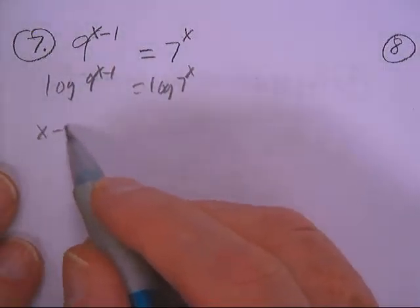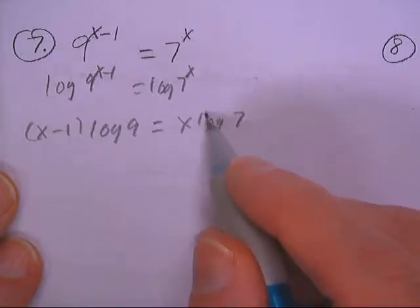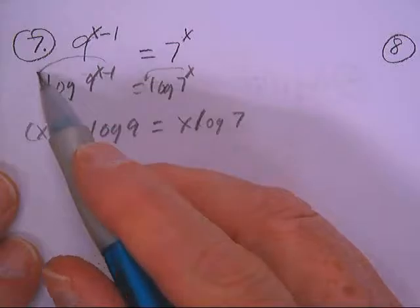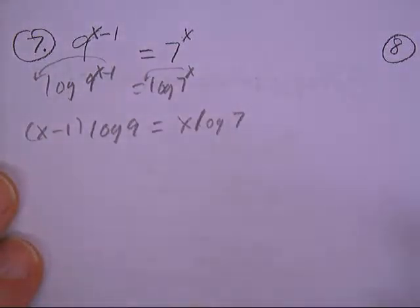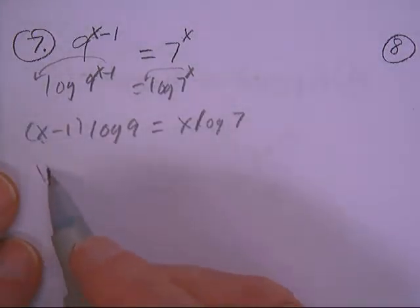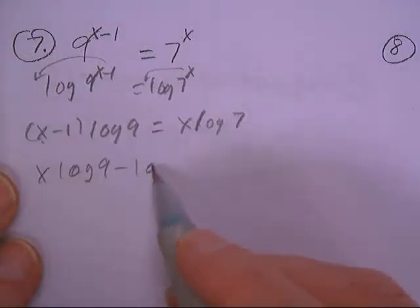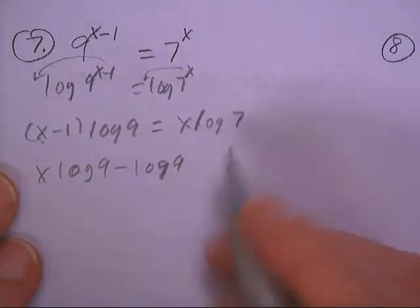the power property to bring these powers down to the front. Now I need to distribute over here: x log 9 minus log 9 equals x log 7.